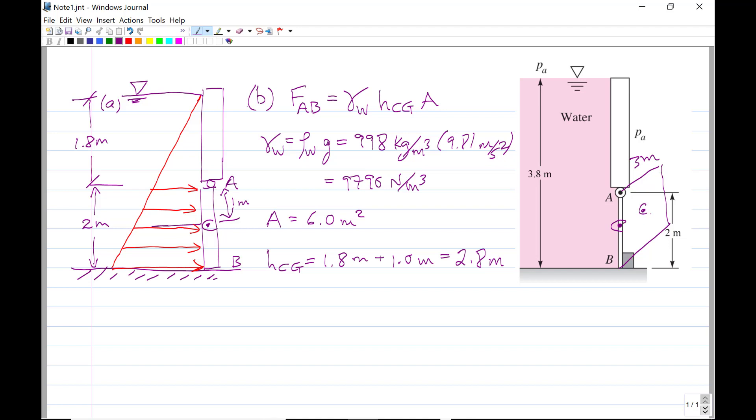Of course, the centroid of the gate is actually over here, the centroid of the gate from the free surface. So FAB making the substitutions is going to be 9790 newtons per cubic meter, 2.8 meters times 6.0 meters squared. You can see we have newtons per meter cubed, and we have meters cubed on the top. So that's going to give the force 164,500 newtons, 164.5 kilonewtons. That's the answer to part B.